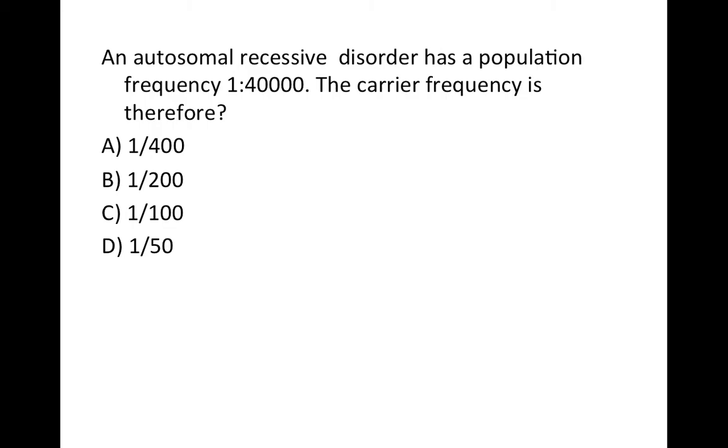Let's see the other problem. An autosomal disorder has a population frequency of 1 by 40,000. The carrier frequency is therefore. Again, this question is from CSIR exam. Pause the video, make an effort, and then resume the video to see the process. So what is given here? It is given autosomal recessive disorder, which means a phenotype.